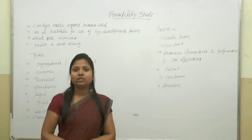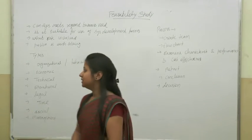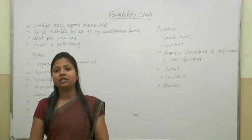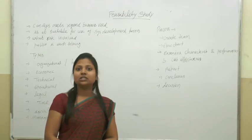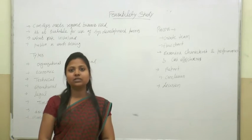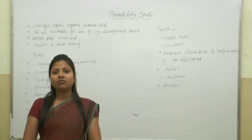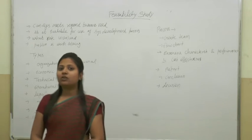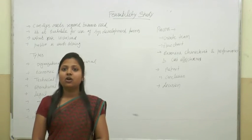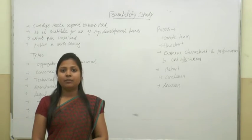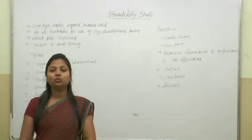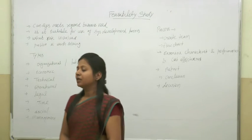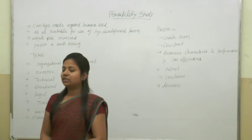Now, what are the types of feasibility implemented in this study? First is organizational and behavioral feasibility. This works on the strategy of the organization and the behavior of employees, because teamwork and behavior are very important for a project to run. Second is economic feasibility — this covers budget or cost-effectiveness implemented in an organization. If it is suitable, the project will go further for implementation.